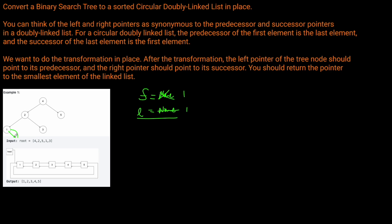Remember that in an in-order traversal it's left, node, then right. We went left, found nothing, did our logic for node 1, tried the right subtree, found nothing. So we return up back to the 2. We've fully explored its left subtree, so now we do our linking for node 2. This time we have seen a last element, so 2 is not the first element. We link: 1's right pointer points to 2, and 2's left pointer points back to 1. Now the last element we've seen is 2, and we go into 2's right subtree to find the 3.